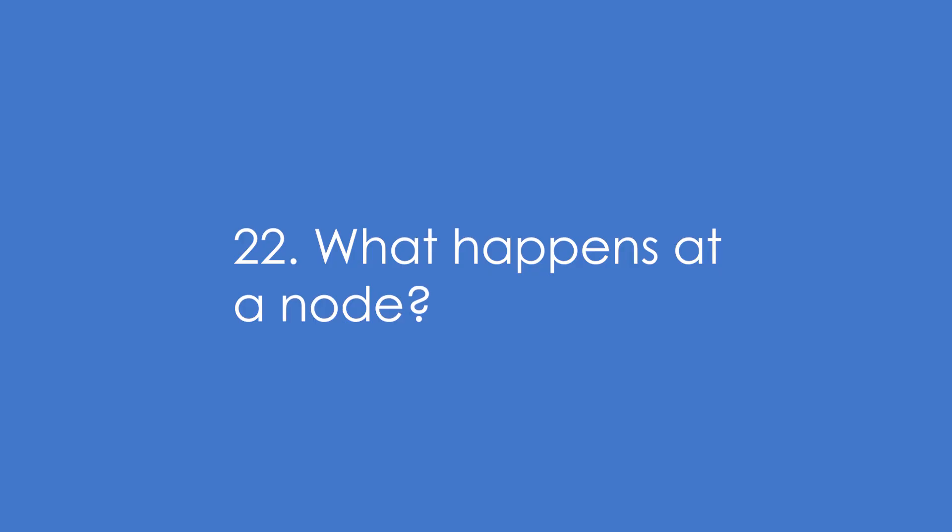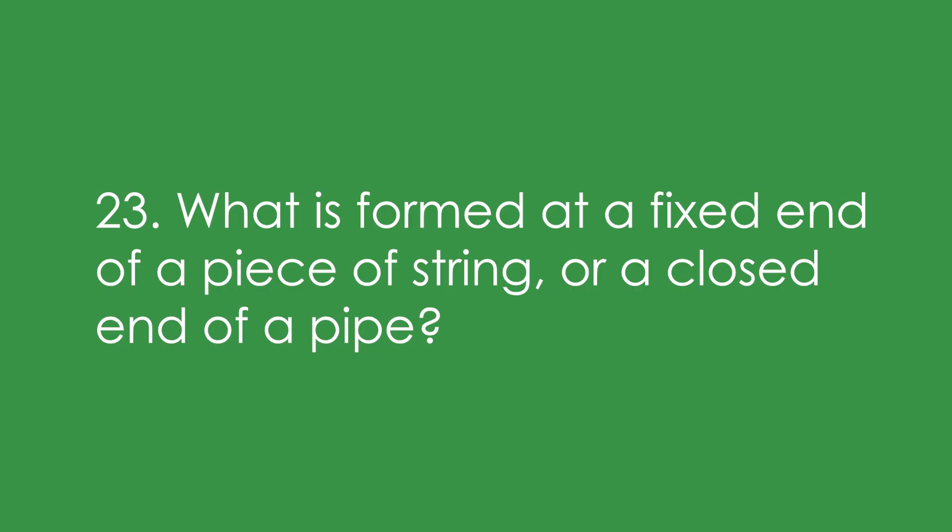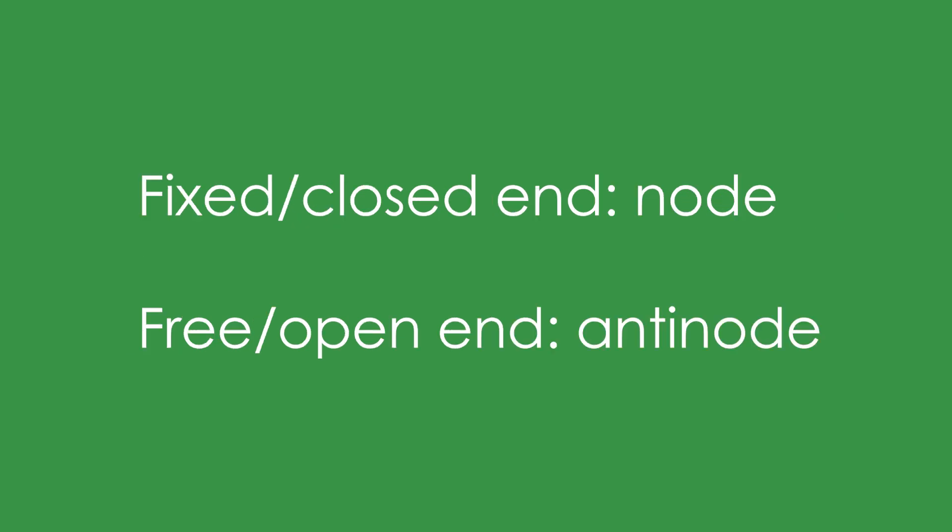22. What happens at a node? We have just destructive interference — amplitude is zero. 23. What is formed at a fixed end of a piece of string or a closed end of a pipe? At a fixed or closed end we have a node, and at a free or open end we have an antinode.